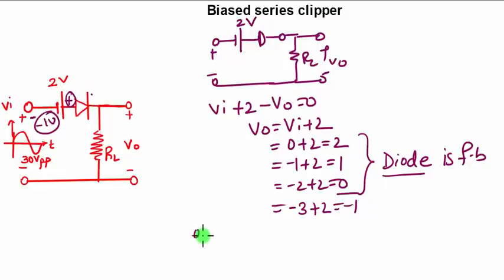So after 2 volts the circuit will look like the diode will be open circuited. There will be no current in the load resistance. Since there is no current in the load resistance, your VO will be 0.